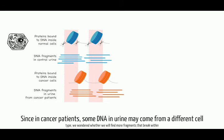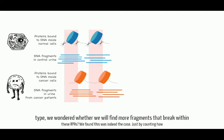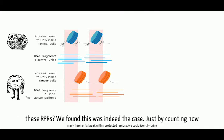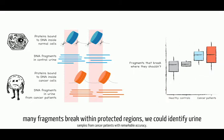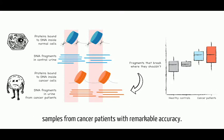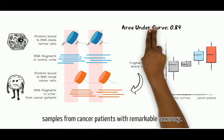Since in cancer patients, some DNA in urine may come from a different cell type, we wondered whether we would find more fragments that break within these RPRs. We found this was indeed the case. Just by counting how many fragments break within protected regions, we could identify urine samples from cancer patients with remarkable accuracy.